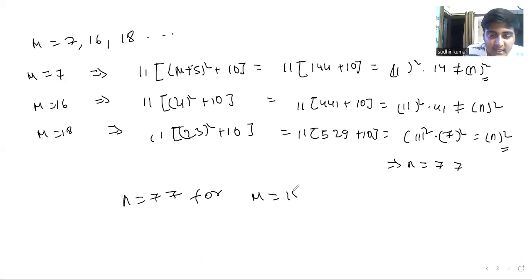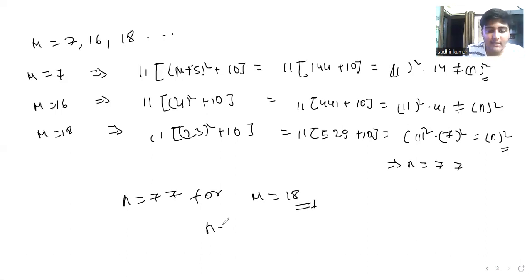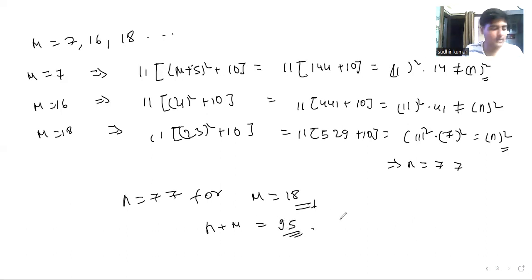So m=18 is the smallest value, with n=77. Therefore n + m = 77 + 18 = 95 is our answer. Thank you.